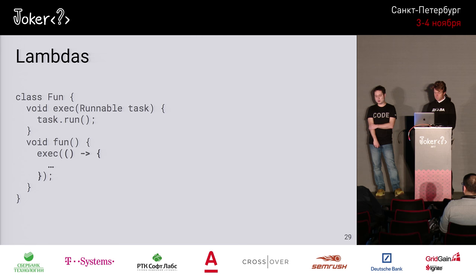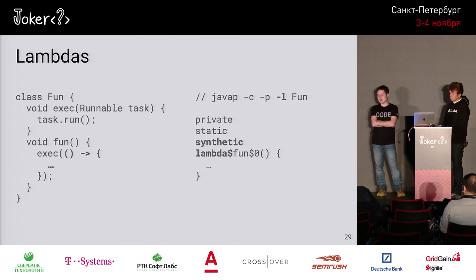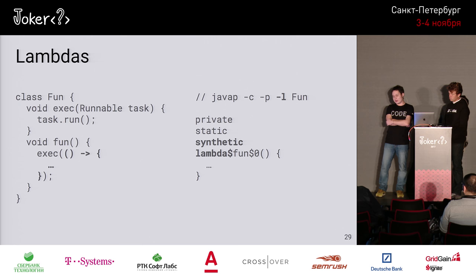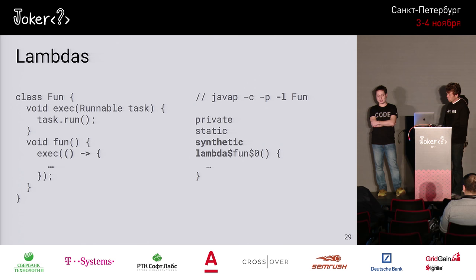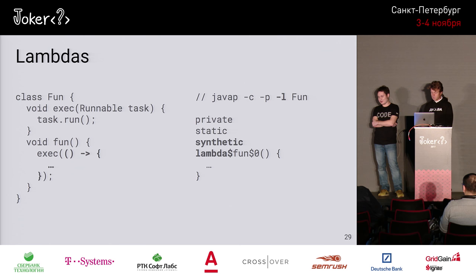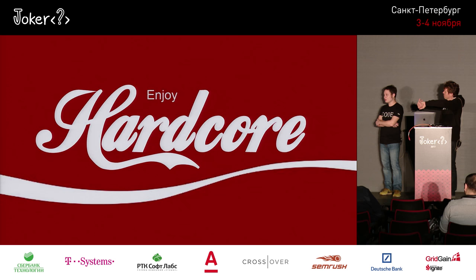Another example of synthetic constructions is how lambdas are implemented. Looking at the bytecode of a class containing a lambda expression with line numbers enabled, you'll notice the compiler created a synthetic method whose name starts with 'lambda$', and all the bytecode within this method is associated with the line numbers of the actual lambda expression. For JaCoCo, even though this method is synthetic and compiler-generated, we need to show coverage for it — otherwise you wouldn't see coverage on the original lambda expression.